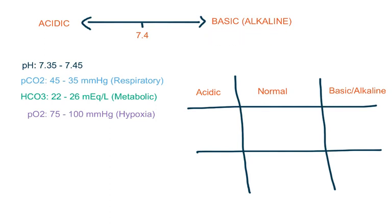The partial pressure of carbon dioxide is 35 to 45, so anything more than 45 is acidotic and anything less than 35 is alkaline. The bicarb level — if it is less than 22 it is acidotic, and if it is more than 26 it is alkaline.